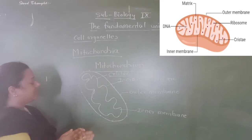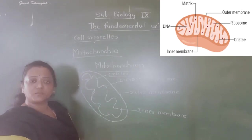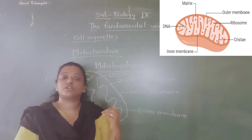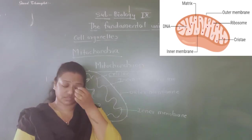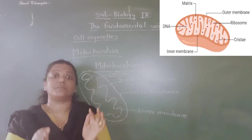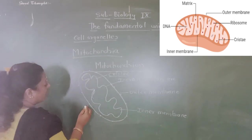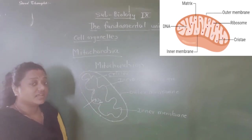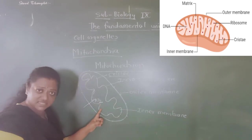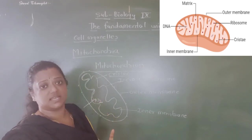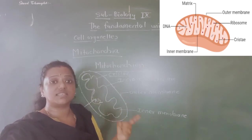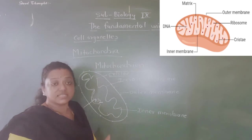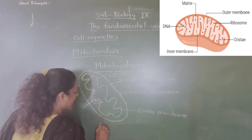This mitochondria is the site of respiration. Whatever food we eat is converted into water-soluble nutrients, and those nutrients are broken down in the presence of oxygen. Oxygen enters through the small pores. This breakdown of food material in the presence of oxygen is called aerobic respiration, which gives us energy. That energy is stored in the mitochondria in the form of ATP. So mitochondria is called the powerhouse of the cell.